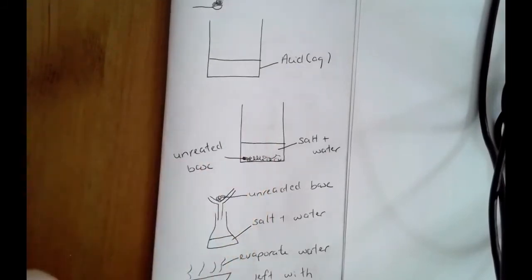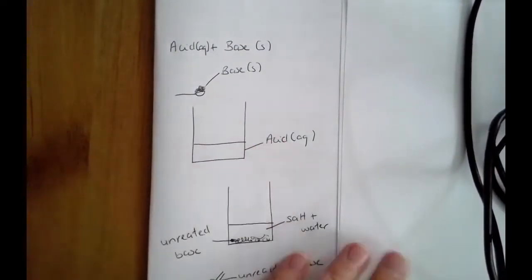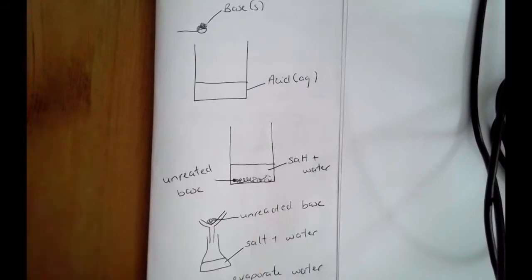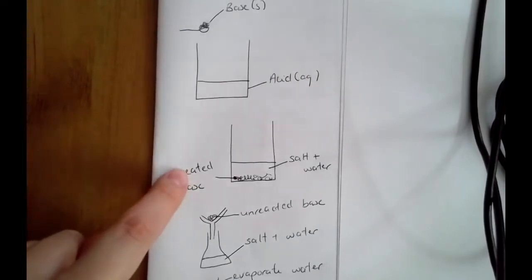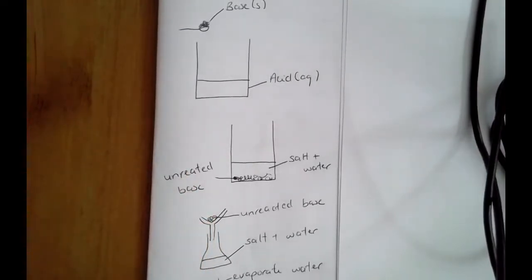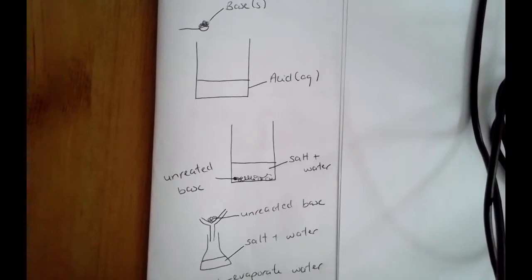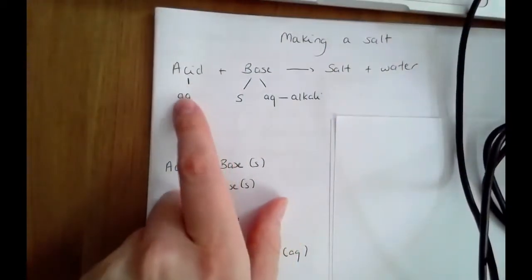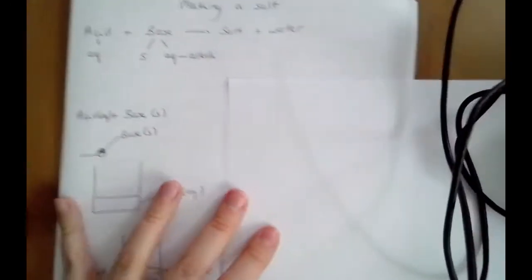In this method, because you're adding a solid to a liquid, adding too much isn't a problem — you can easily remove that unreacted solid base from your solution. However, if the base were in liquid form and you added too much, you would not be able to remove it. You'd end up with salt, water, and excess base, so you wouldn't be able to get a pure salt.